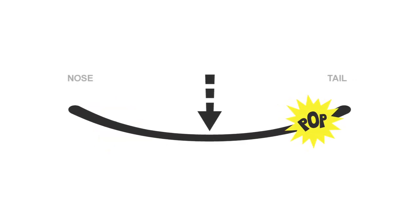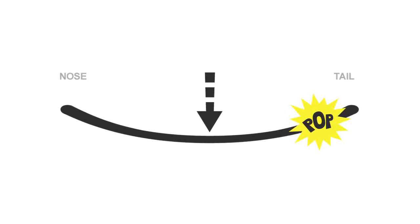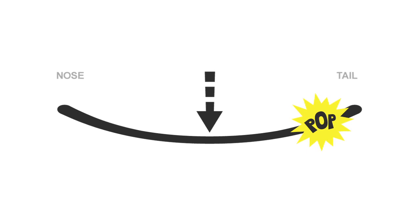The versatile directional flex features increased pop in the tail and a more resilient nose that allows riders to easily maintain control and flow through all terrain and conditions.